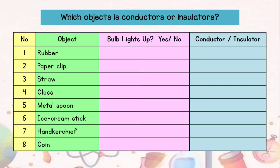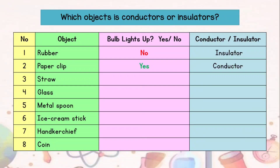Based on the activity just now, let's complete this table. Rubber — does the bulb light up? No, so it is an insulator. Paper clip — yes, the bulb lights up, so it is a conductor. Straw? No, it is an insulator.